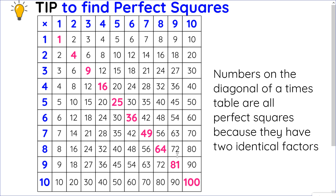Let's talk about how we can find perfect squares. Tips to finding perfect squares, aside from using your calculator, is the numbers on a diagonal of a times table. All those numbers on the main diagonal are perfect squares because they have two identical factors. My favorite perfect square is 25, because 5 times 5 is 25, and 5 is the best number ever. I recommend knowing your times tables up to 10 times 10, especially those numbers on the main diagonal.